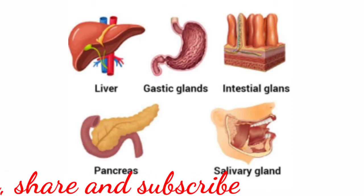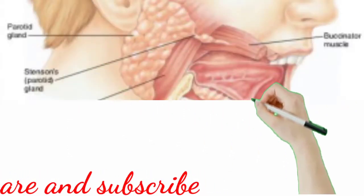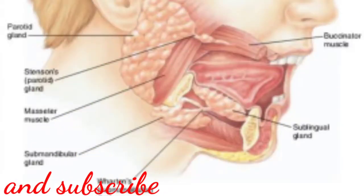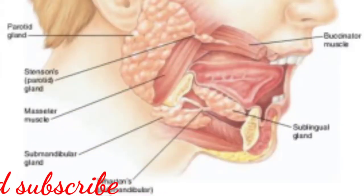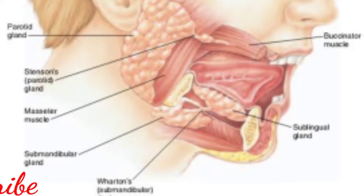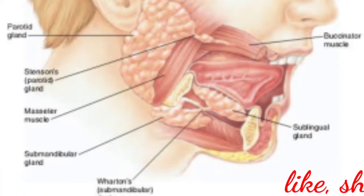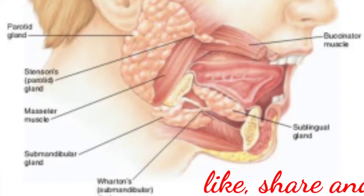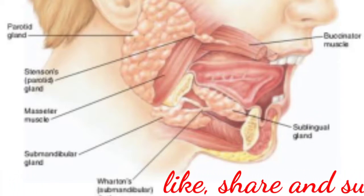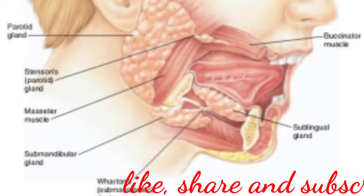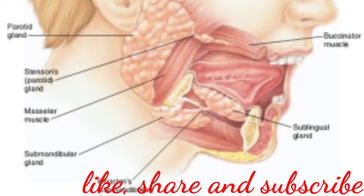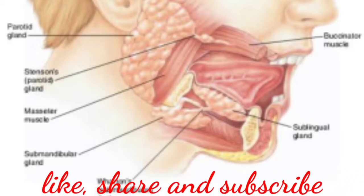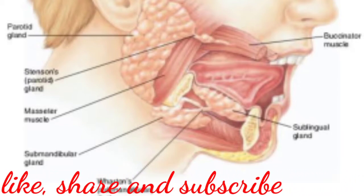The first one is the salivary glands. There are three pairs of salivary glands in the mouth: the largest parotid glands in the cheeks, the submaxillary or submandibular glands in the lower jaw, and the sublingual glands beneath the tongue.